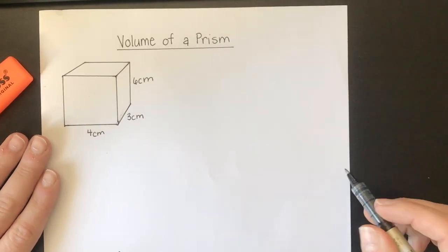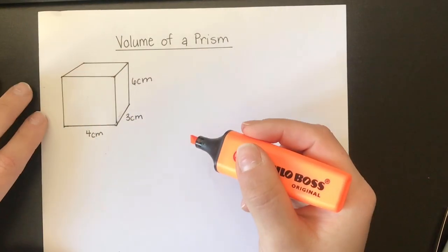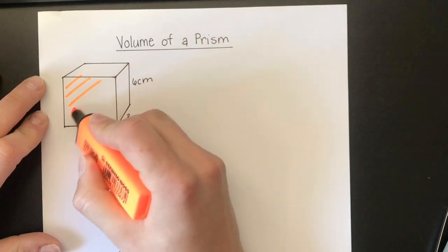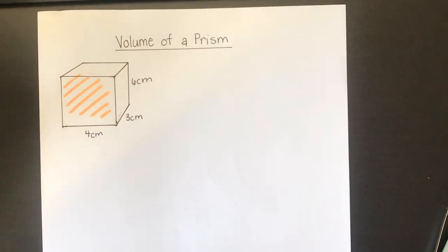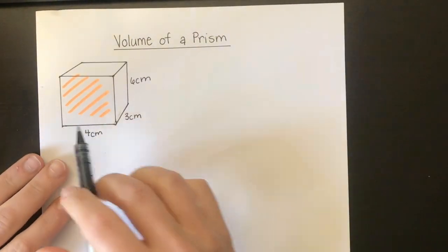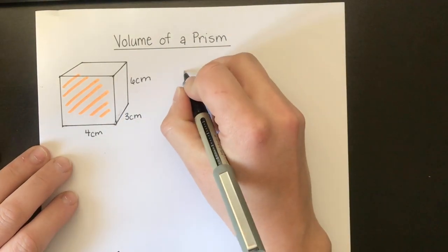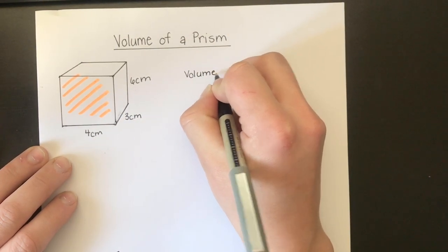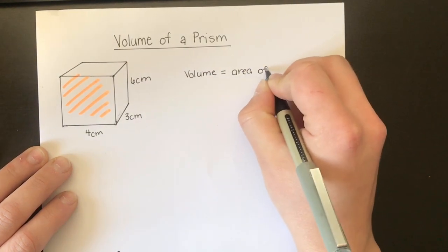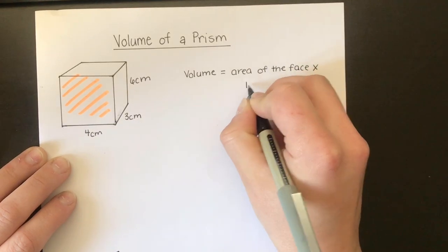To find the volume of a prism, you want to find one of the faces. So we're going to find this face right here. I'm going to take the area of that face — and that face is a rectangle, 4 centimeters by 6 centimeters. So the volume is going to be the area of the face times by the length.